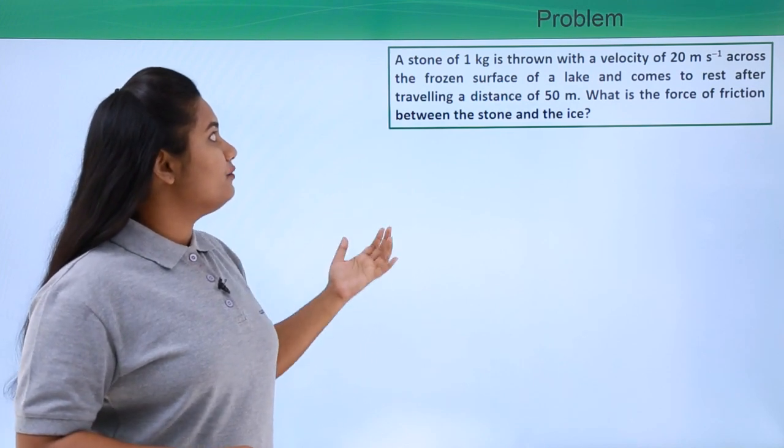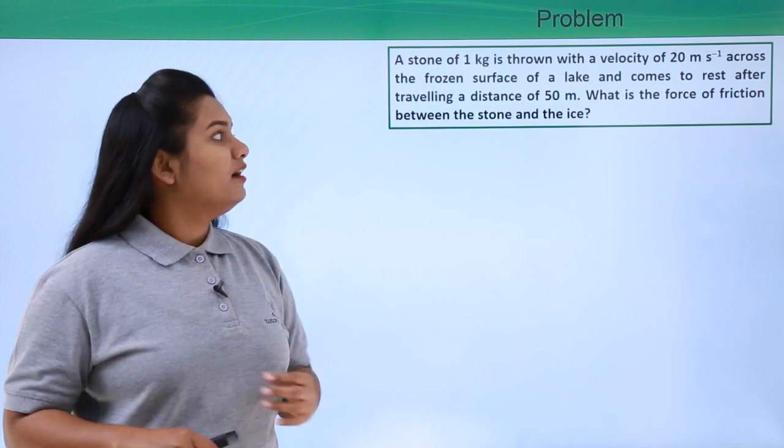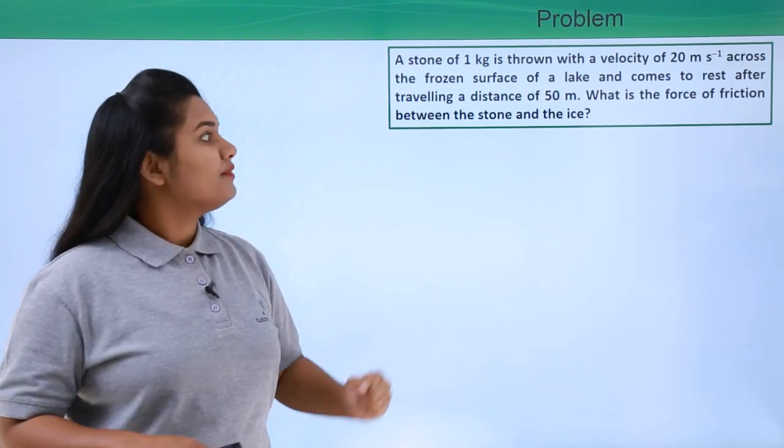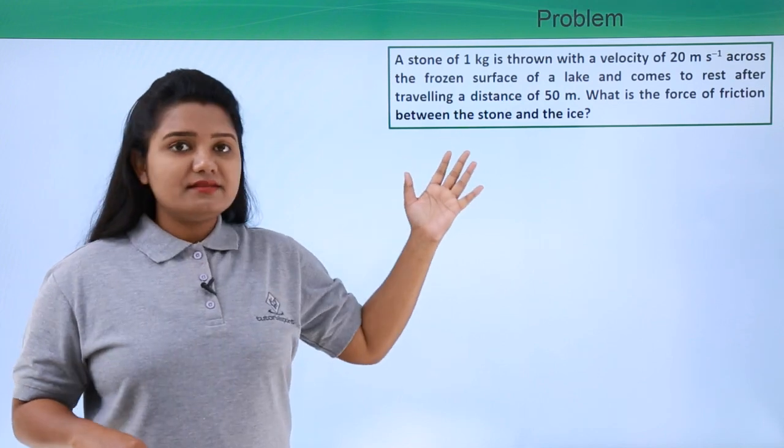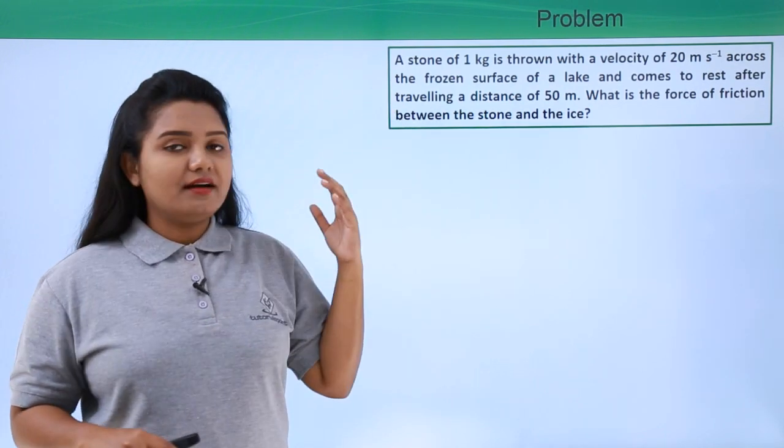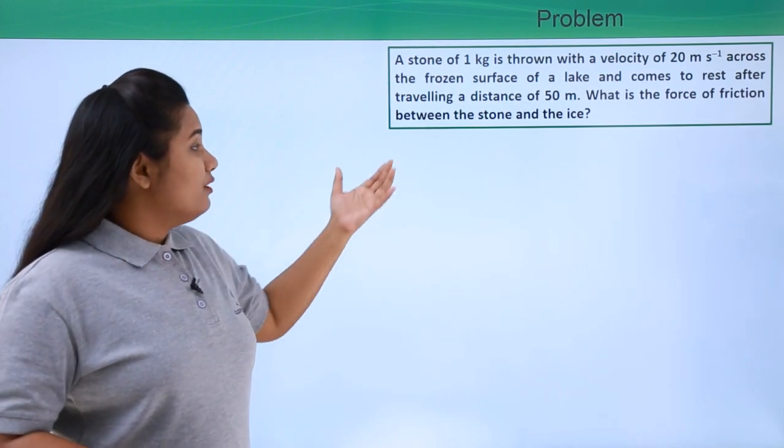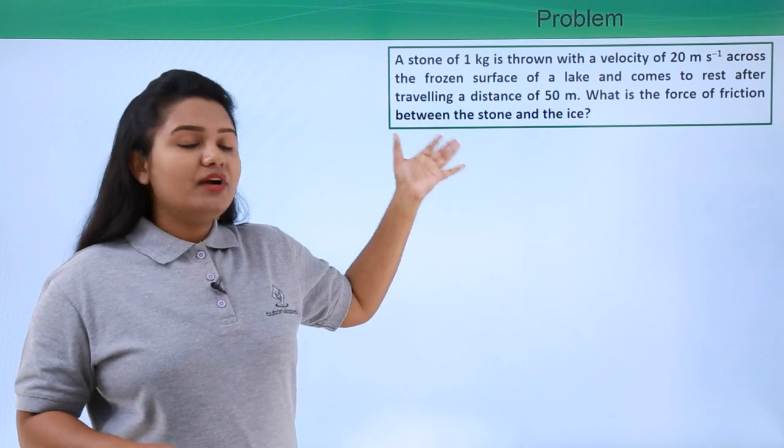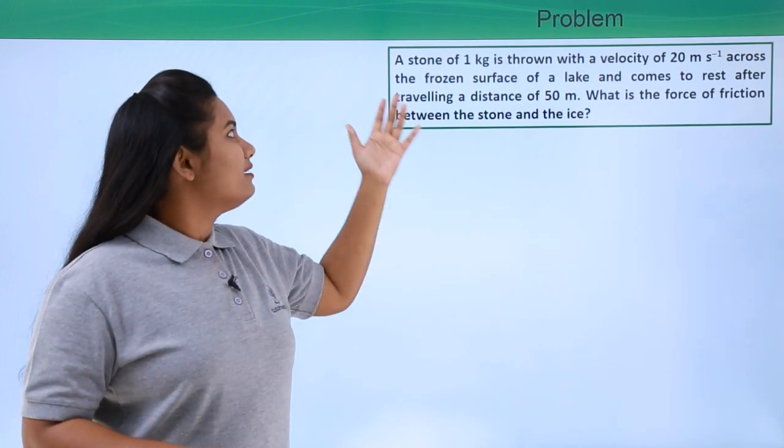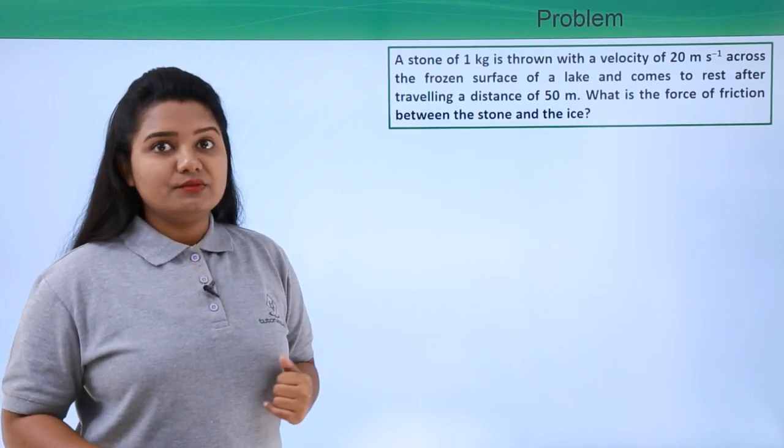So this question says that there is a stone of 1 kg which is thrown with a velocity of 20 meters per second across a frozen lake and the stone eventually comes to a stop after 50 meters. We need to find what is the force of friction, what is the amount of force of friction that has made this stone to come to a stop. So let us do that.